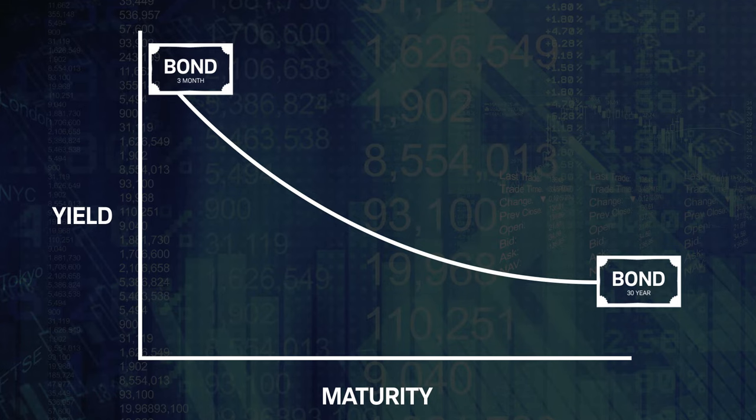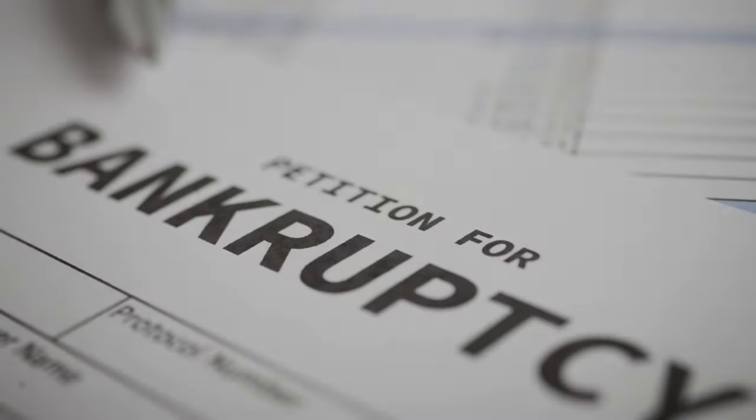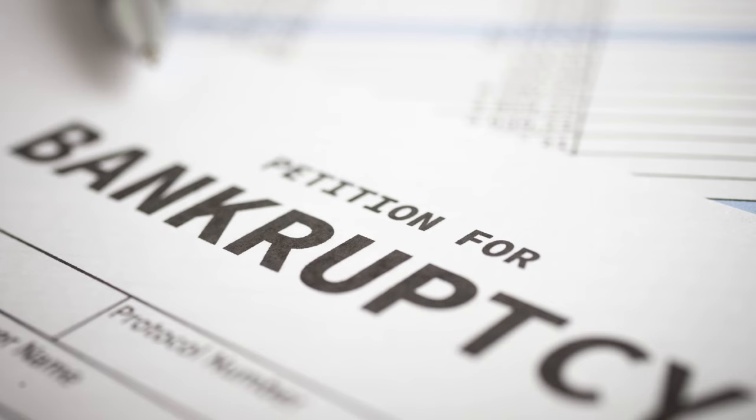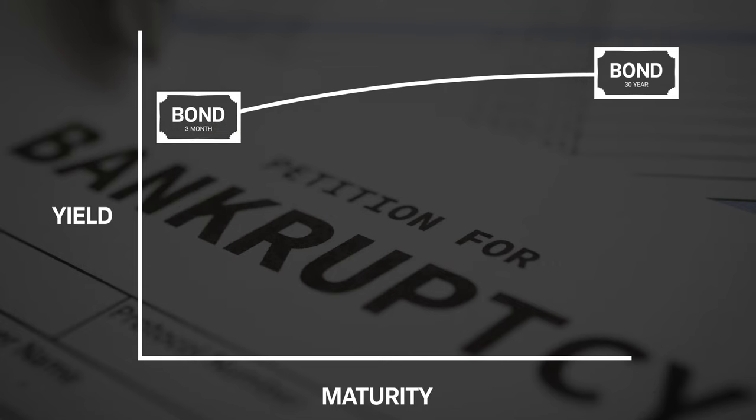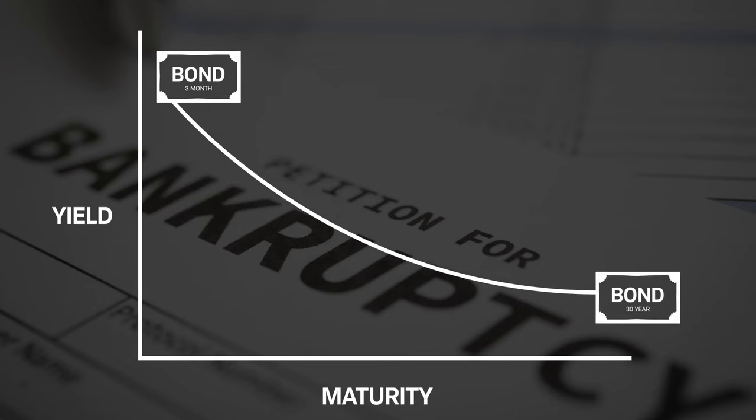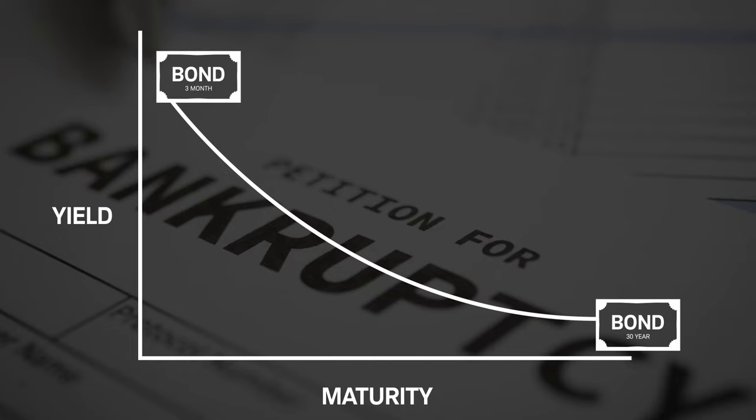An inverted yield curve forms when investors expect economic growth to slow. If economic growth slows, investors might also expect interest rates to fall. These expectations increase the demand for higher yielding maturities, which actually drives the yields of longer maturities lower.